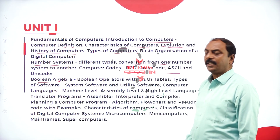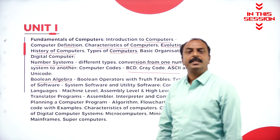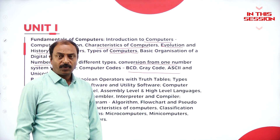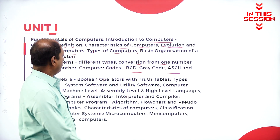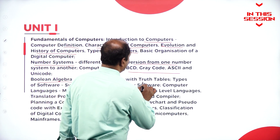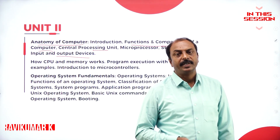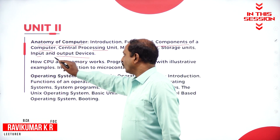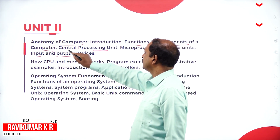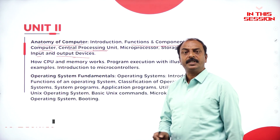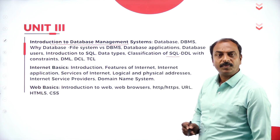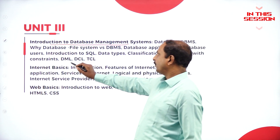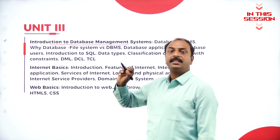Boolean algebra deals with binary numbers, 0s and 1s, or with the concept of true or false — in other words, with a truth table. A computer is divided into three parts: input unit, output unit, and CPU or central processing unit. We have different types of SQL commands like DDL, DML, DCL, and TCL.